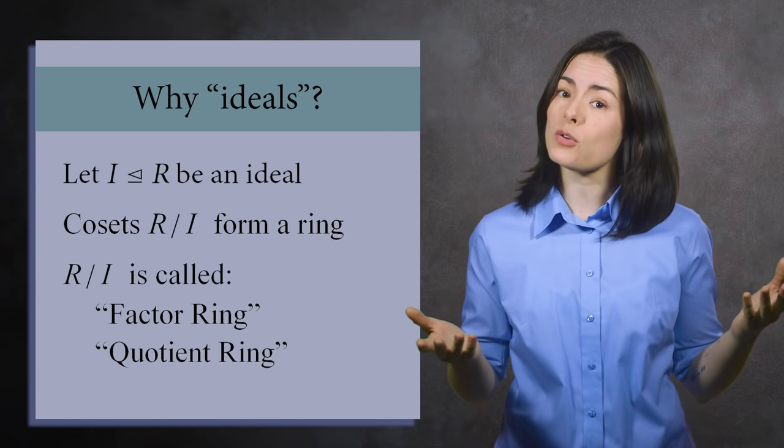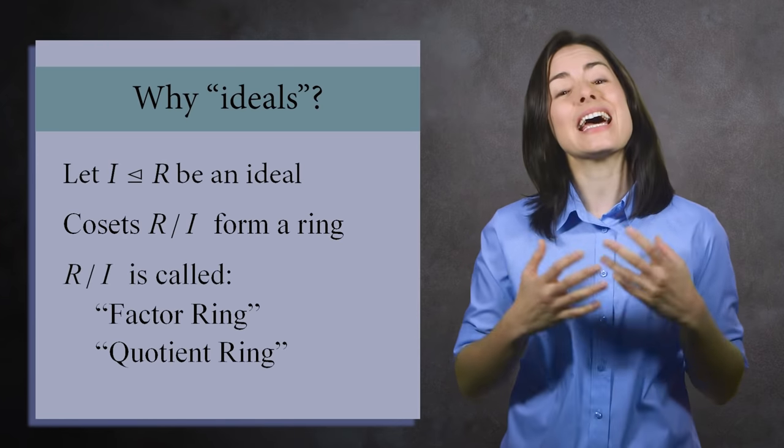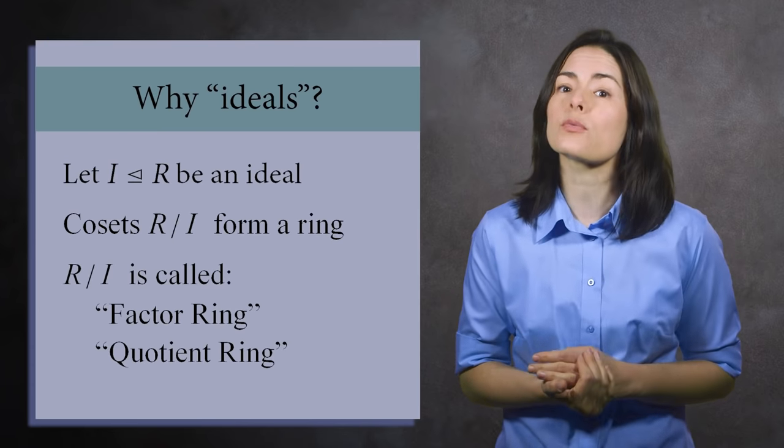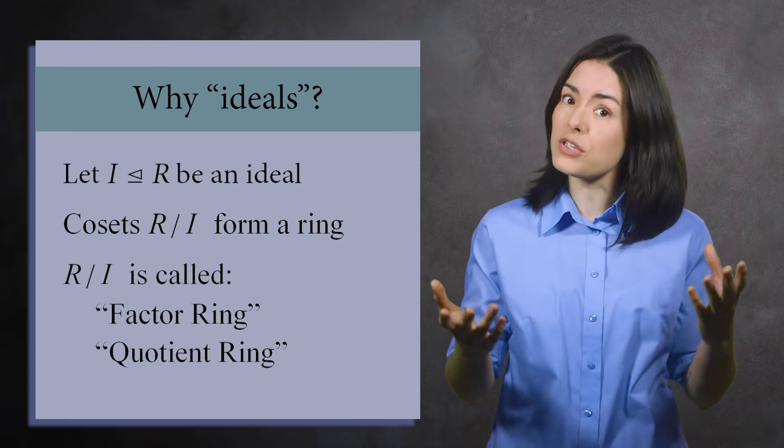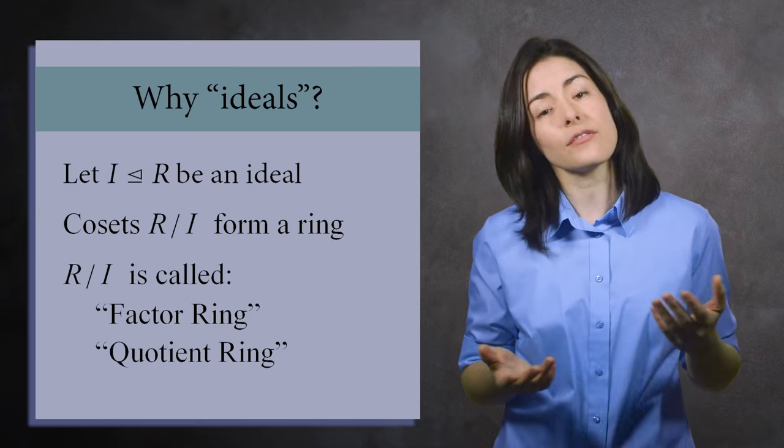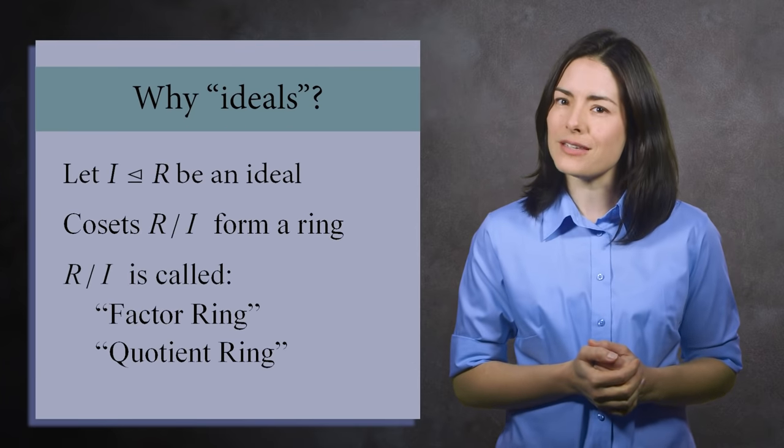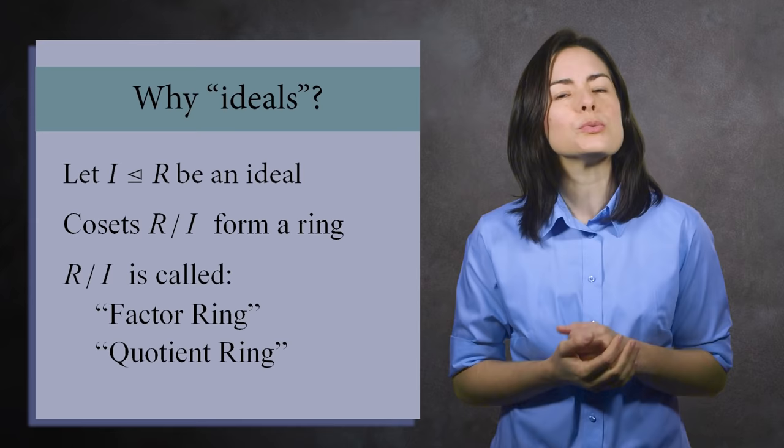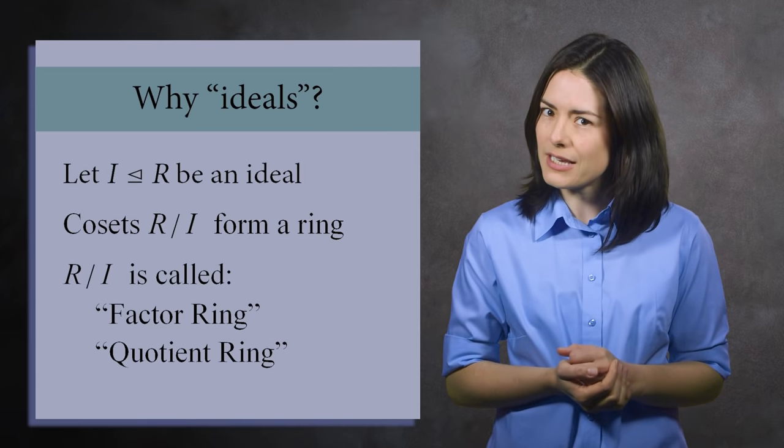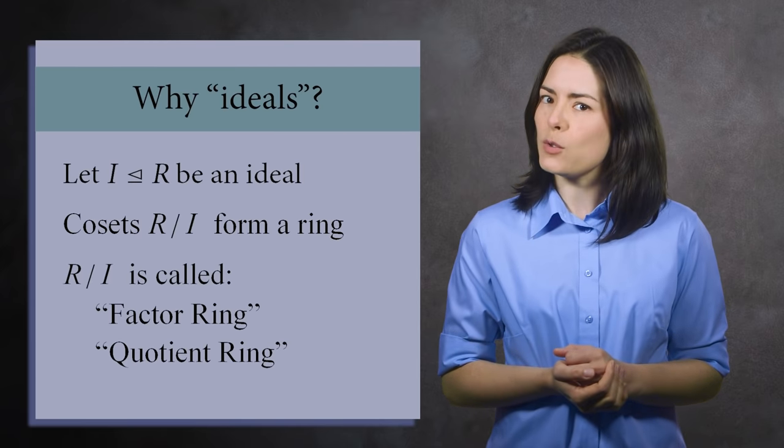The reason is historical. The concept of an ideal came about in the late 19th century, when number theorists were working to generalize the ideas of integers, prime numbers, and factoring. But there is another reason. Ideals are not technically subrings, because they do not have a multiplicative identity. Oh, disqualified.